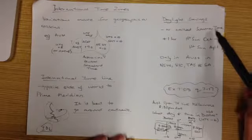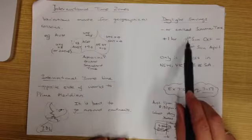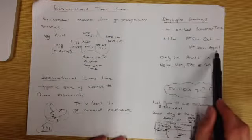Daylight savings we also talked about, it can sometimes be called summertime. We add an hour on in daylight savings, and it goes from the first Sunday in October to the first Sunday in April.